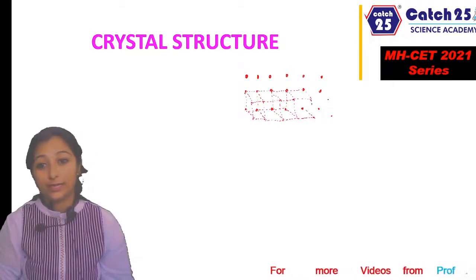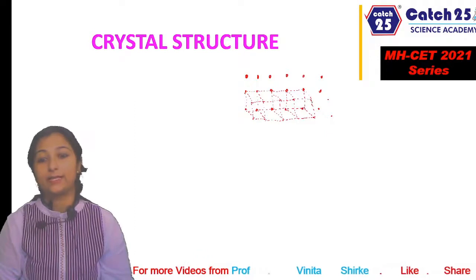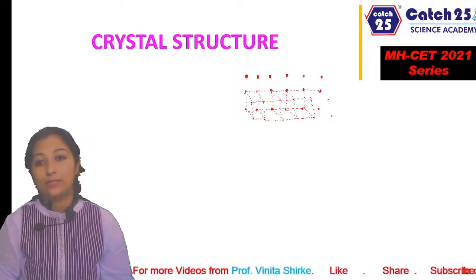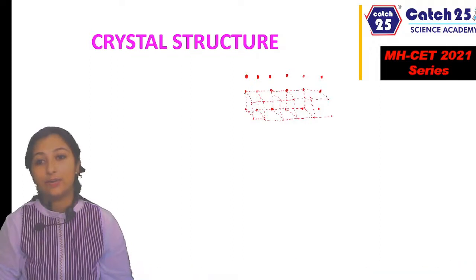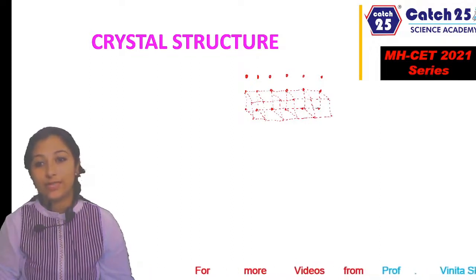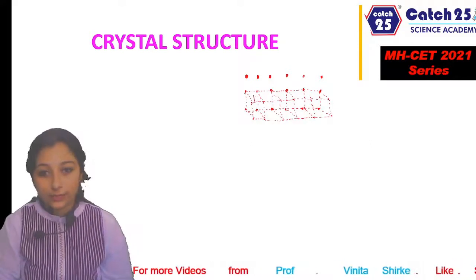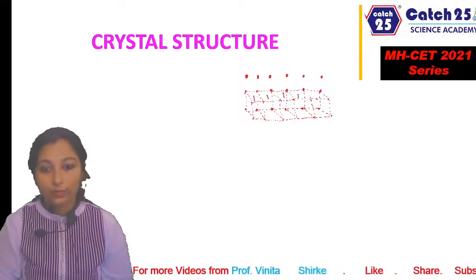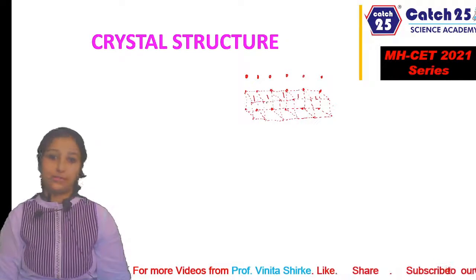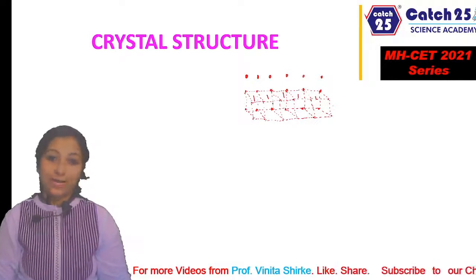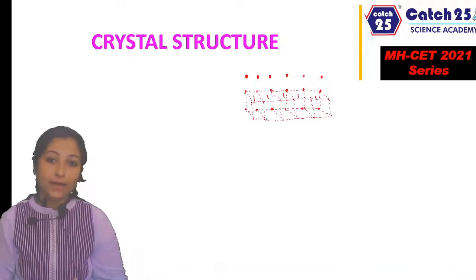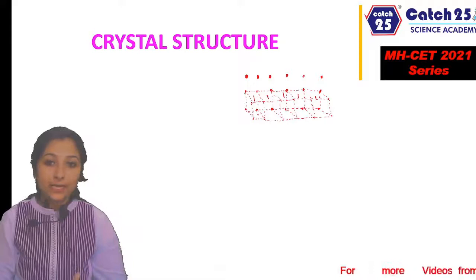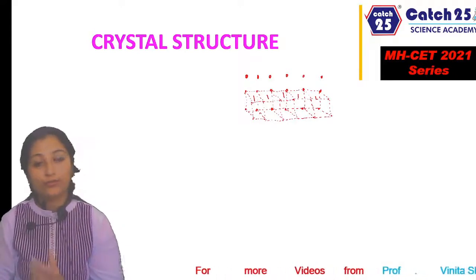It's not that only a cube can be made — hexagon, tetragon, monoclinic bhi hote hai. But here these atoms are arranged in the shape of a cube. So yeh jo unit cell hai, abhi haap pe kitne unit cell hue hai? This is 1, 2, 3, 4, 5 — so these are the unit cells. Atoms are present in the shape of a unit cell.